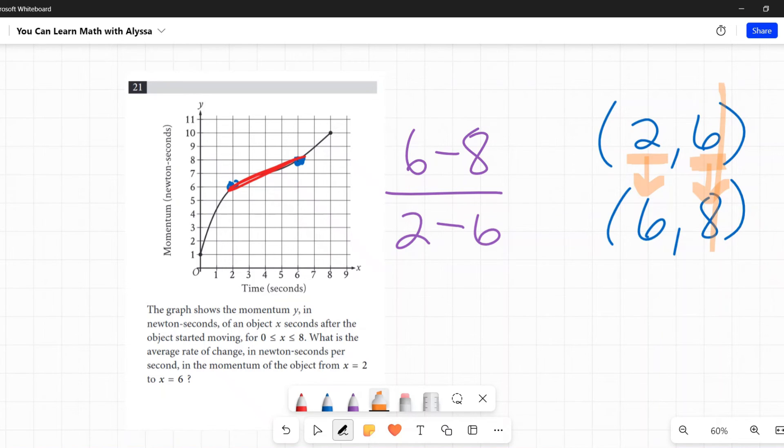Here, 6 minus 8 is negative 2, and 2 minus 6 is negative 4. Negative 2 over negative 4 simplifies to one half. That is my slope and that is my average rate of change between those two points.